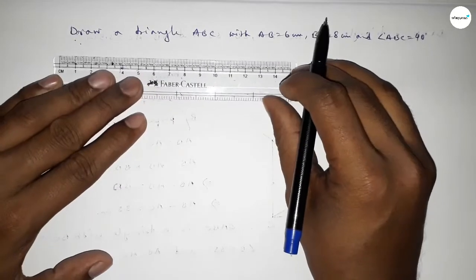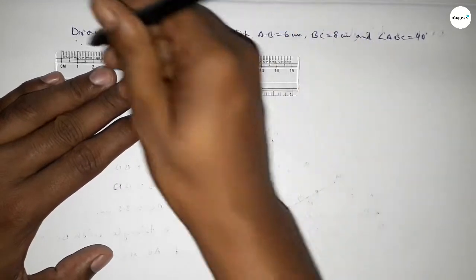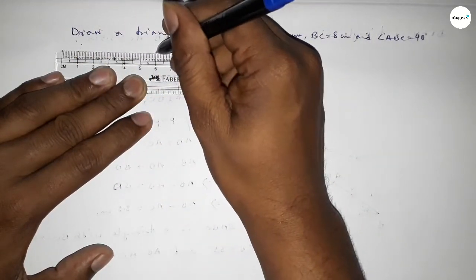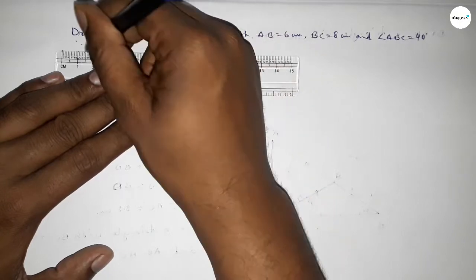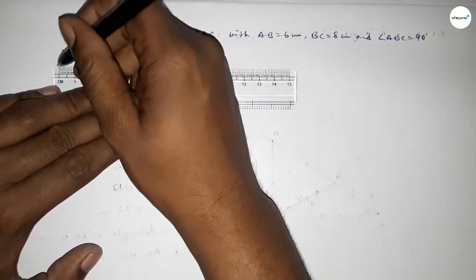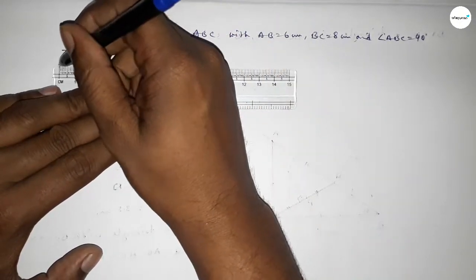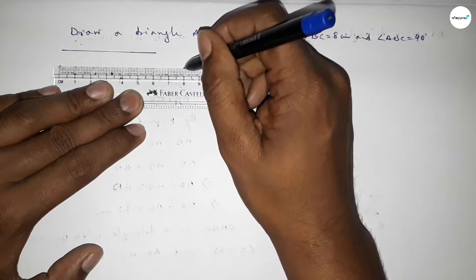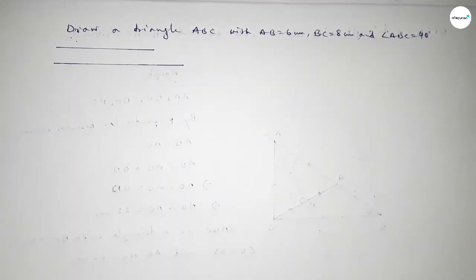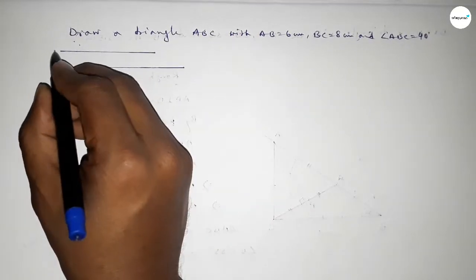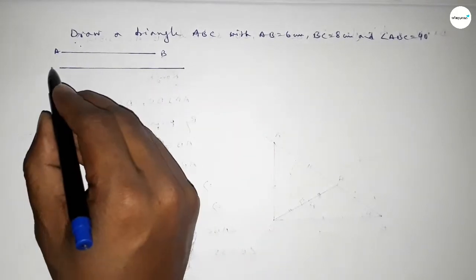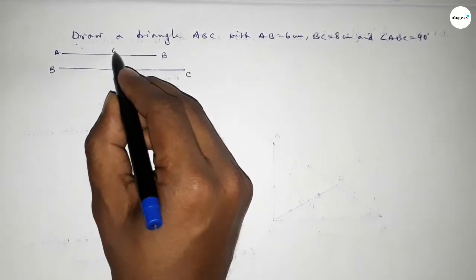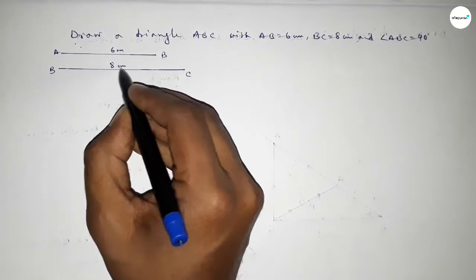First of all, we have to draw a line of length 6 centimeters — so this is 6 centimeters. Next we have to draw another line of 8 centimeters: 0, 1, 2, 3, 4, 5, 6, 7, 8. So this one is AB and this is BC. AB equals 6 centimeters and BC equals 8 centimeters.